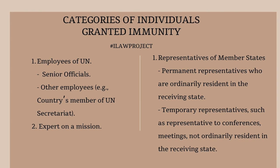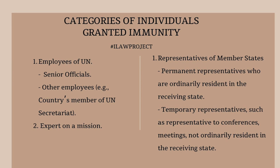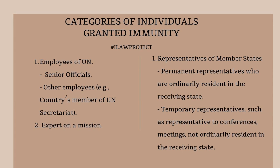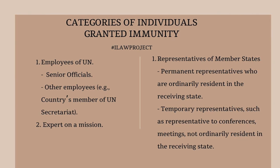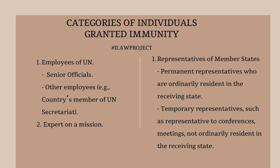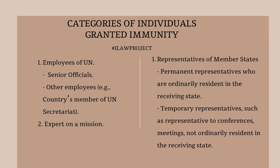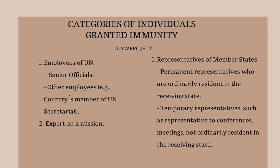The second category of individuals that enjoy immunity are representatives of member states. Here, there are two sub-categories that enjoy varied degrees of immunity. The first is permanent representatives who are ordinarily resident in the receiving state. Temporary representatives — such as representatives to conferences and meetings — not ordinarily resident in the receiving state, also enjoy a degree of immunity that is different from that enjoyed by permanent representatives.